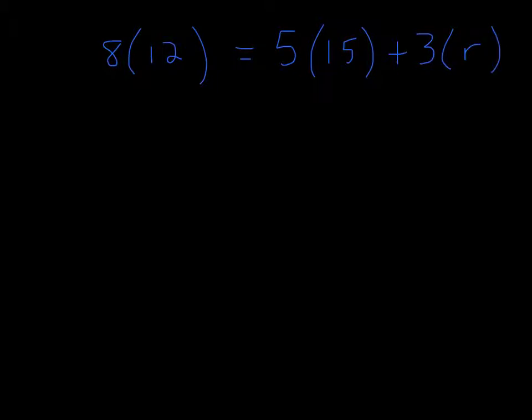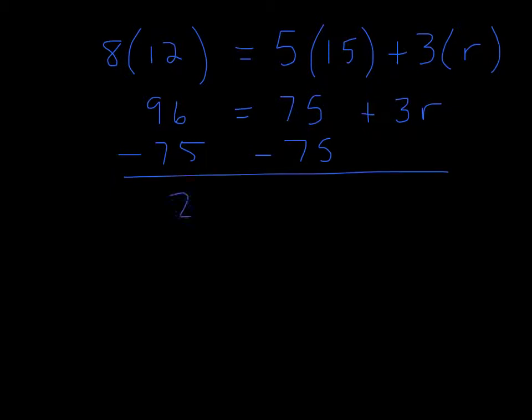And there we go. Now we've just got to solve for R. So 8 times 12 is 96. 5 times 15 is 75, and you have 3R. Subtract 75 from both sides. You get 21 equals 3R. Divide by 3, and the rate that he has to travel at for the last 3 hours was 7 miles per hour.